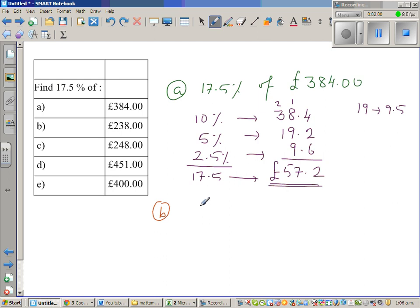So B is again 17.5% of £238. So first again 10% is £23.8. So 5 percent is half of this - half of 20 is 10, half of 3 is 1.5, and half of 0.8 is 0.4, so this is 11.9.